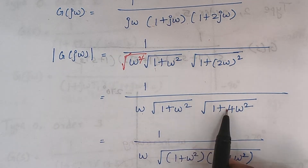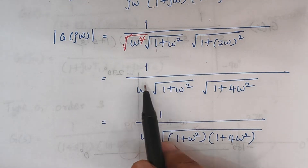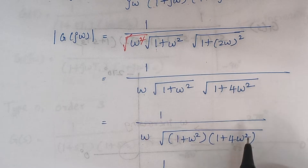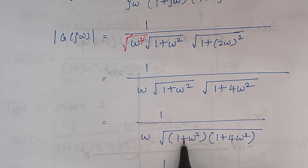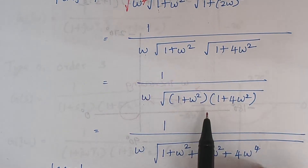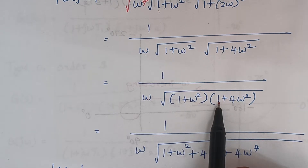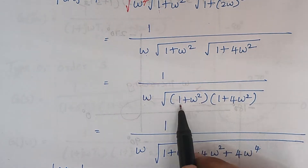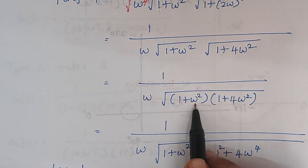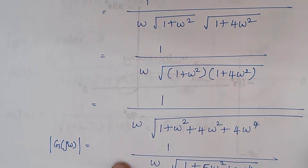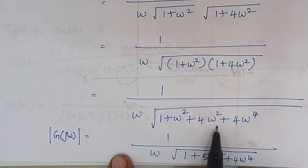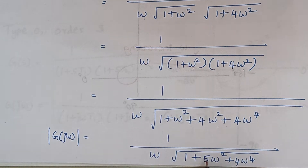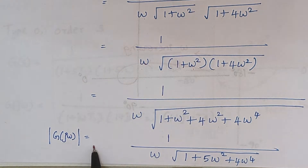Now combining these two things: we can write ω as such and take the square root of the two terms as common. Multiplying these two terms: 1 into 1 plus ω squared gives 1 plus ω squared, plus 4ω squared into 1 gives 4ω squared, and 4ω squared into ω squared gives 4ω to the power 4. Adding ω squared and 4ω squared gives 5ω squared. So this is our final expression for magnitude.